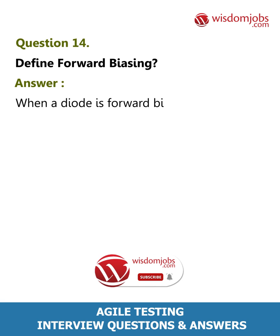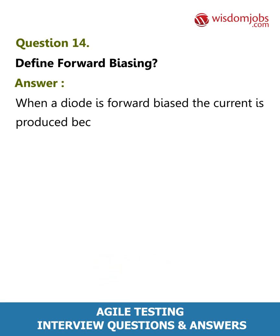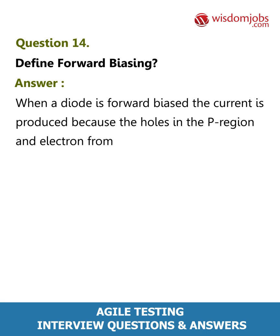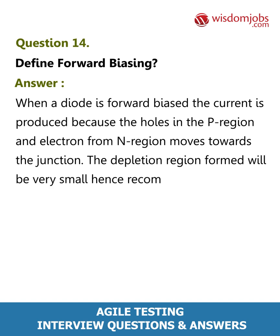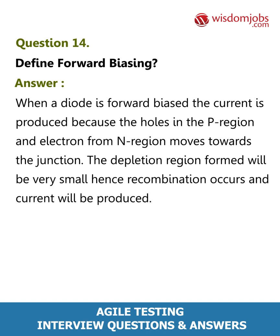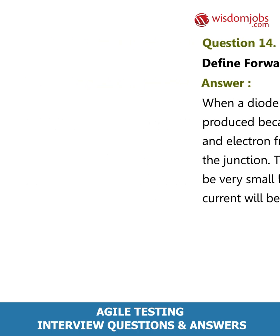Question 14: Define forward biasing. Answer: When a diode is forward biased, current is produced because the holes in the P region and electrons from the N region move towards the junction. The depletion region formed will be very small, hence recombination occurs and current will be produced.